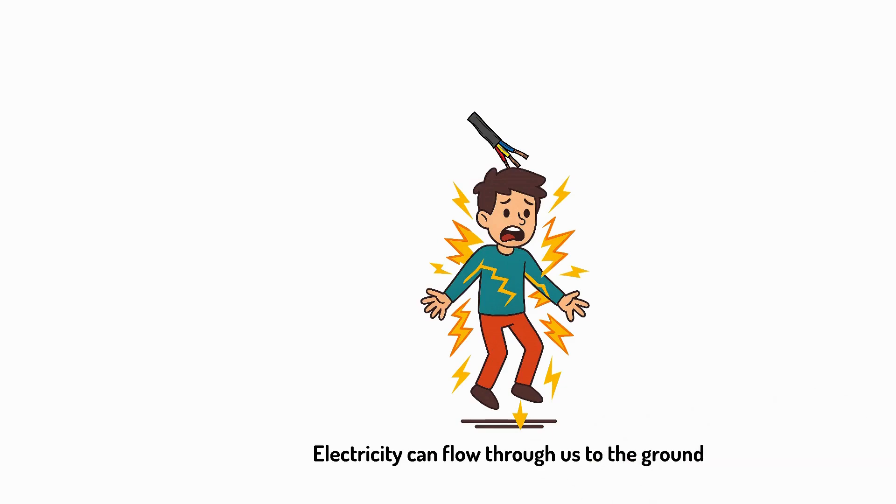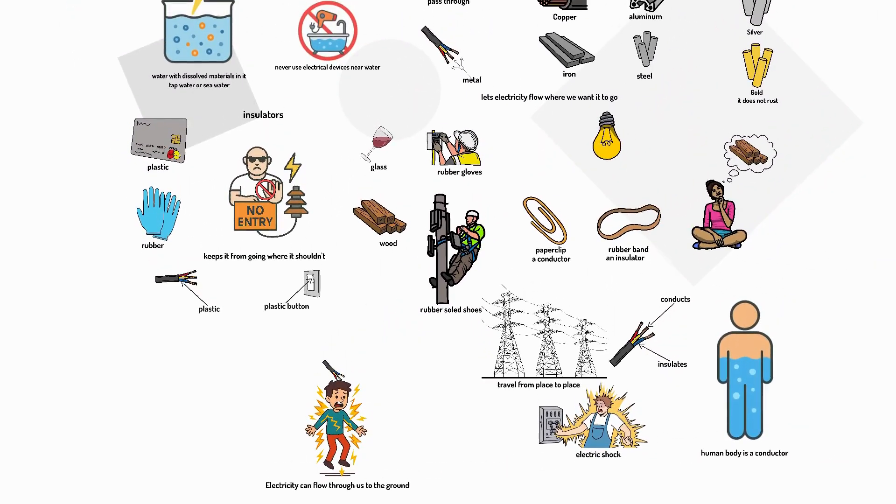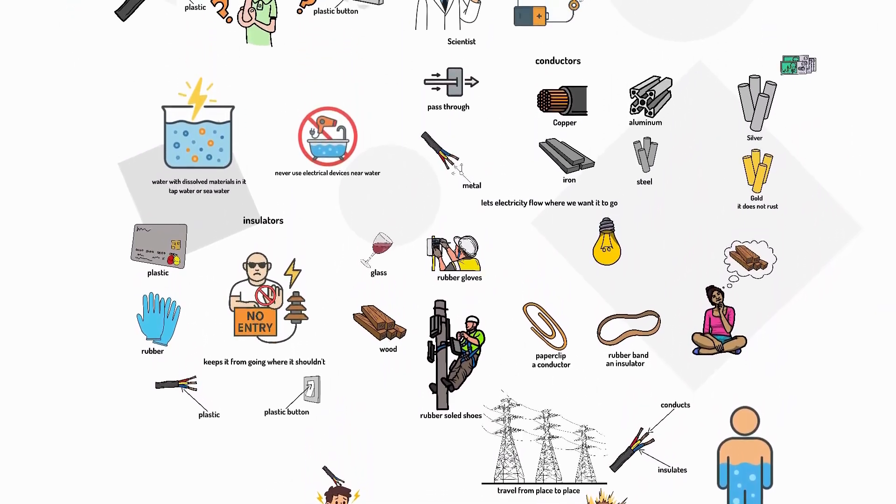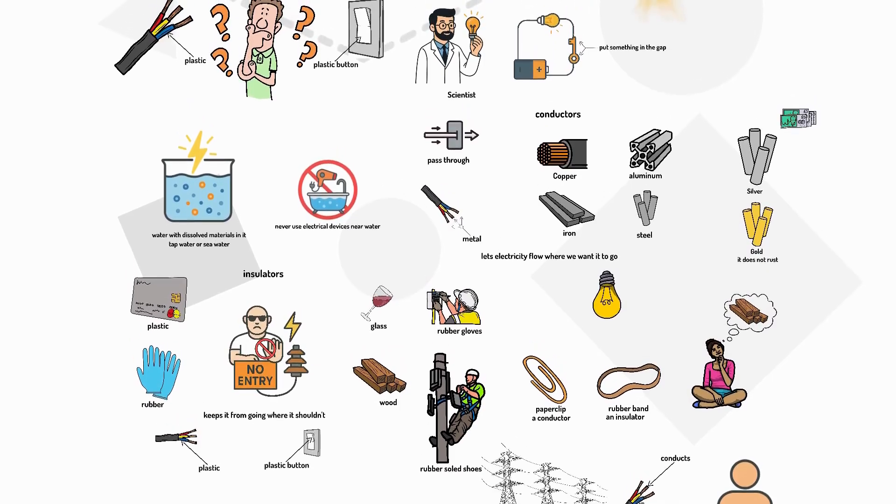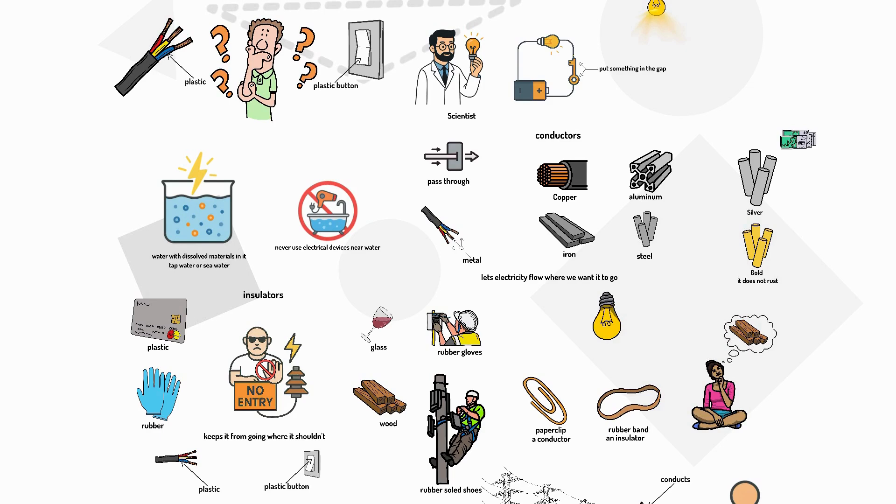Try this at home if you have a simple circuit. Test different objects to see if they're conductors or insulators. Make predictions first, then test safely. Remember, only test with low voltage batteries, never wall outlets.